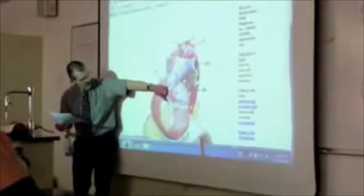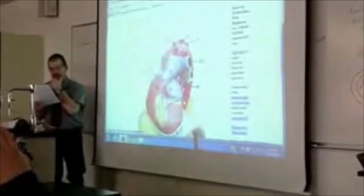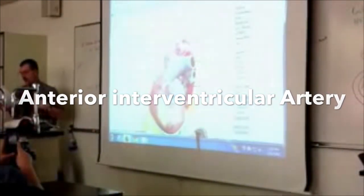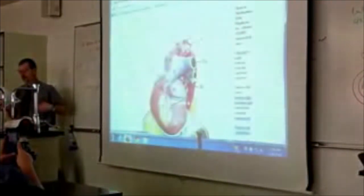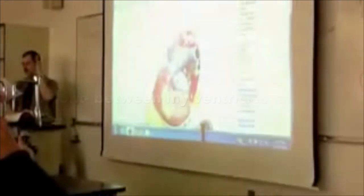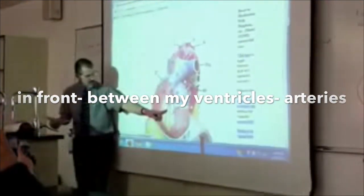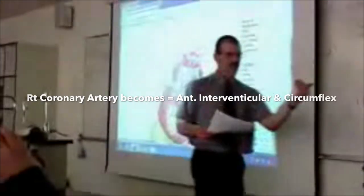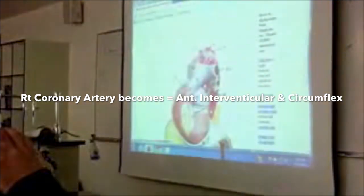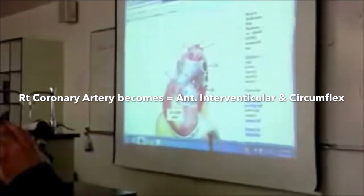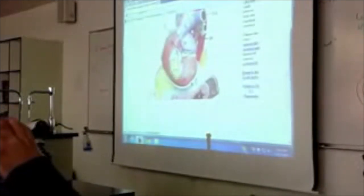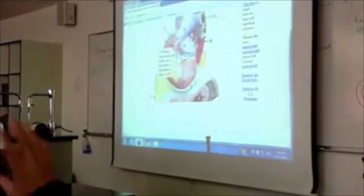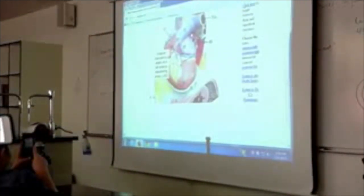Part of the left coronary goes down the front of the heart — that's the anterior interventricular artery, in the front between my ventricles. The left coronary becomes both the anterior interventricular, going between the ventricles in front, and the circumflex, which is the left branch behind the heart.